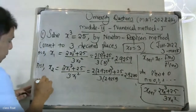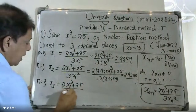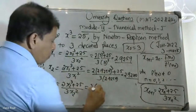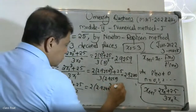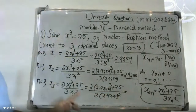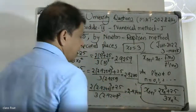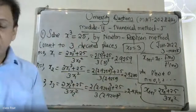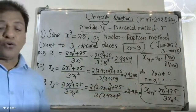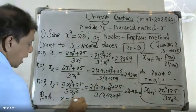For x₂, we use x₂ = (2 × x₁³ plus 25) divided by (3 × x₁²), substituting x₁ equal to 2.9242. This gives x₃ equal to 2.9242. Since x₂ and x₃ coincide, the root is x equals 2.9242.